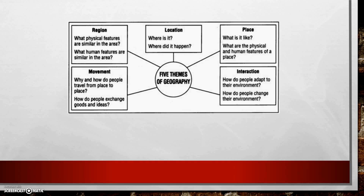For location: Where is it? Finding it on a map — and where did it happen if we're talking about past events? For region: What physical and human features are similar in the area? Political boundaries like dividing states are considered human features because they're done by people. For movement: Why and how do people travel from place to place, and how do people exchange goods and ideas? The exchange of ideas is what we spent a lot of time talking about.